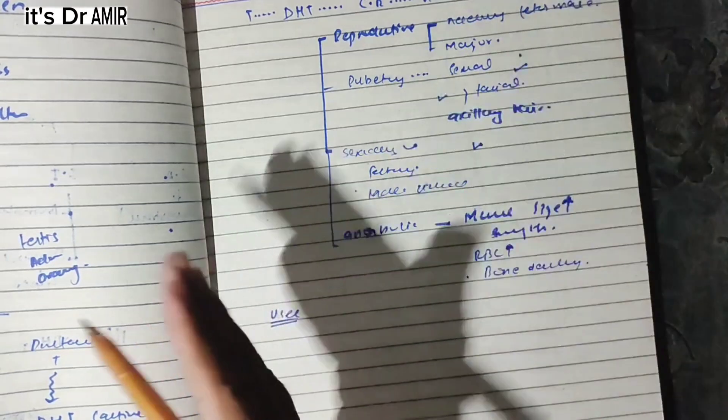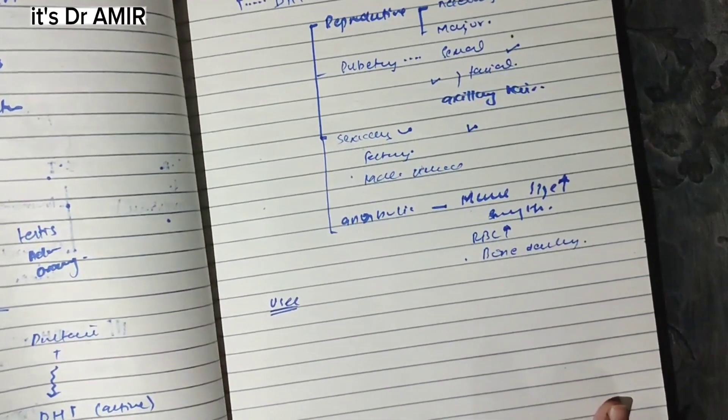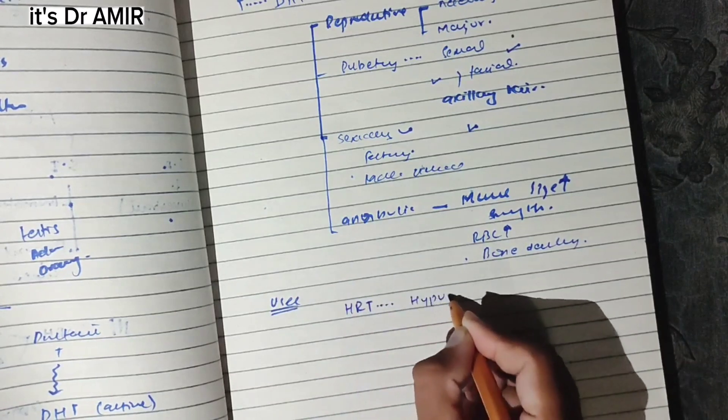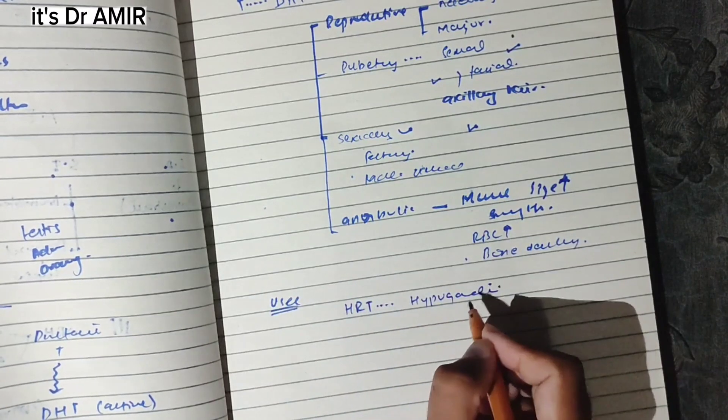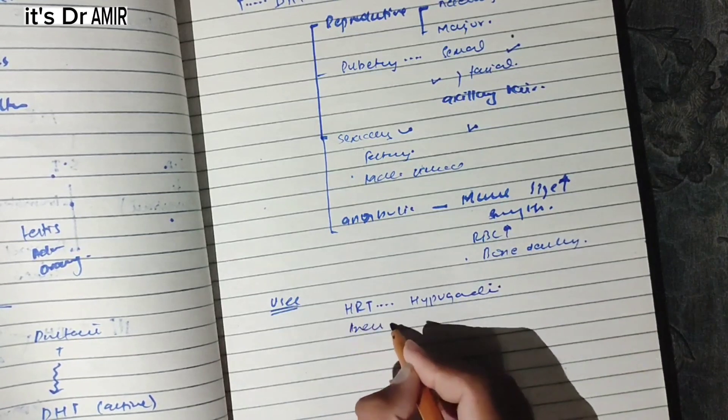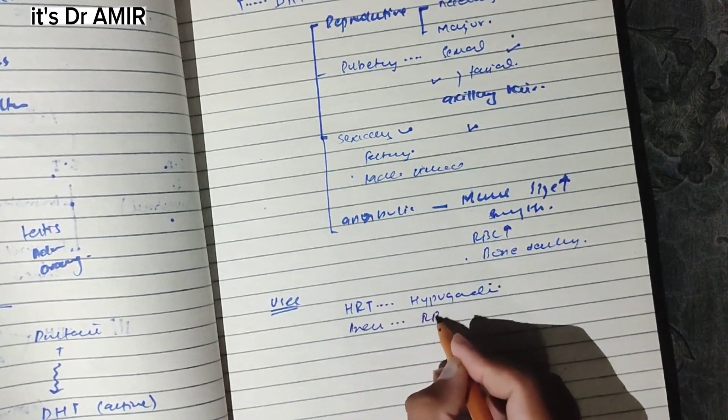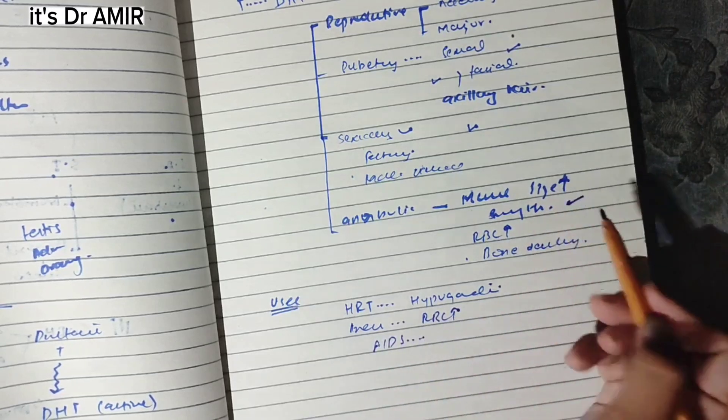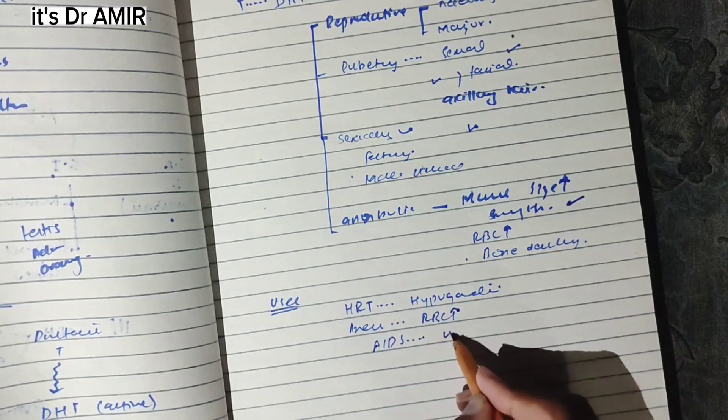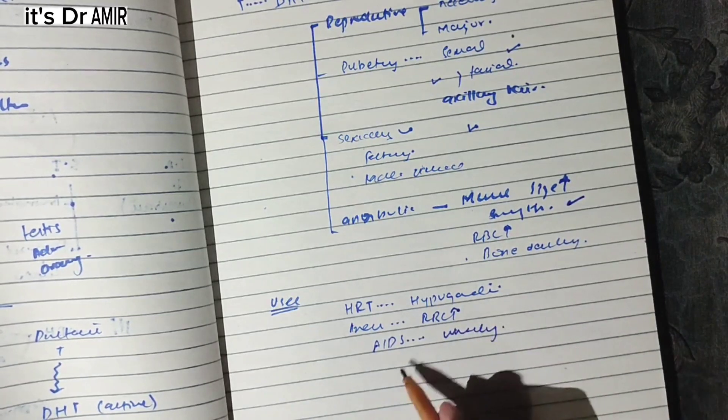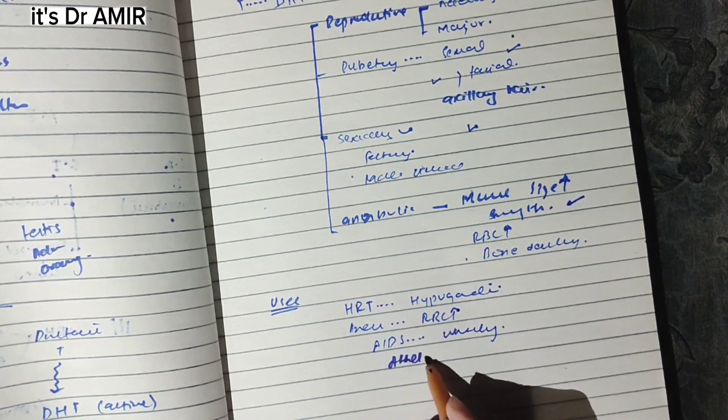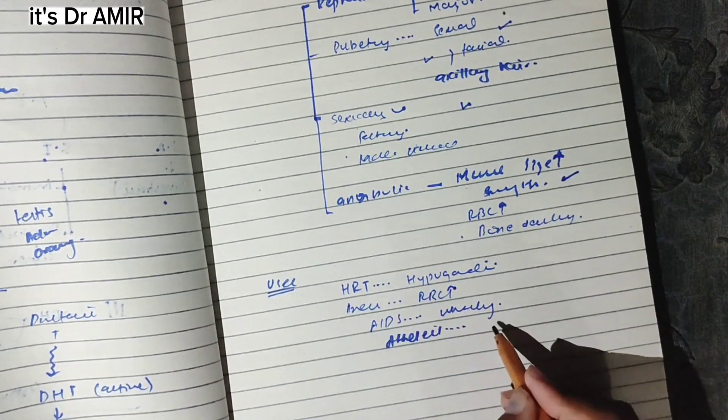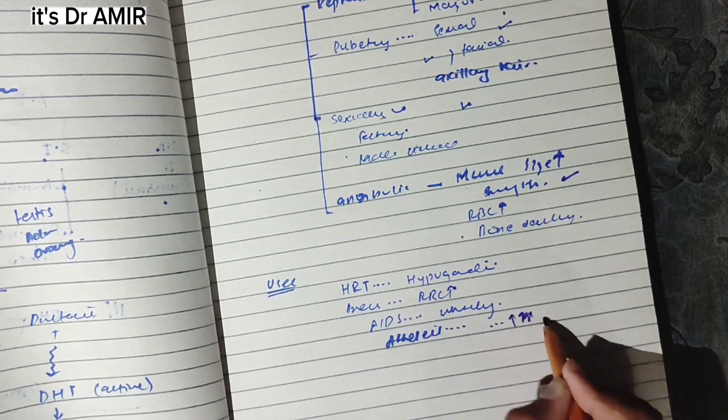If we give a synthetic agonist, we use it for hypogonadism as hormone replacement therapy. If testosterone deficiency occurs, we give it. We also give it for anemia. If there is AIDS and muscle wasting, we can give testosterone because it increases muscle size and strength. Athletes use the agonist or synthetic testosterone to increase muscle strength and bone density.